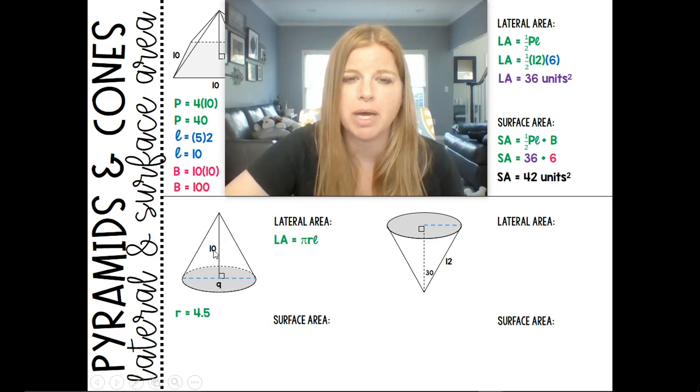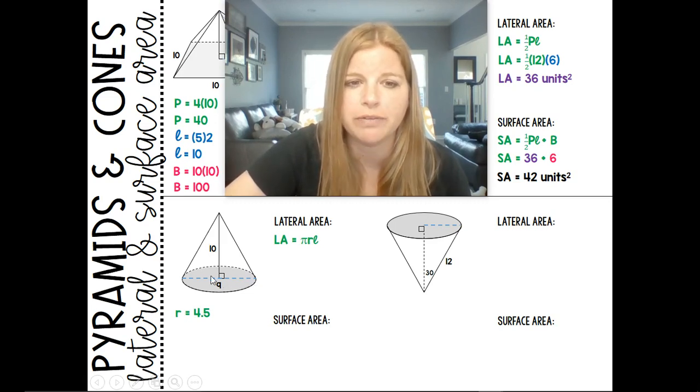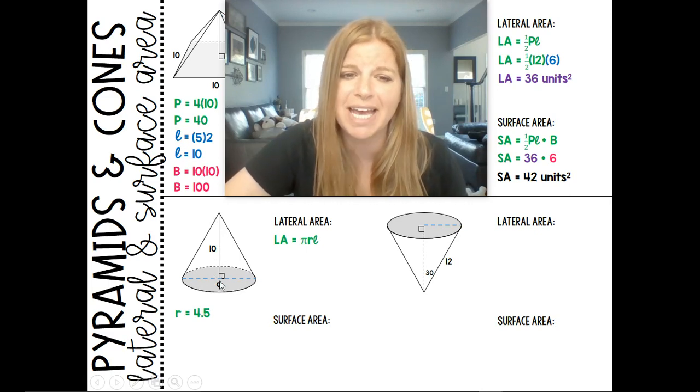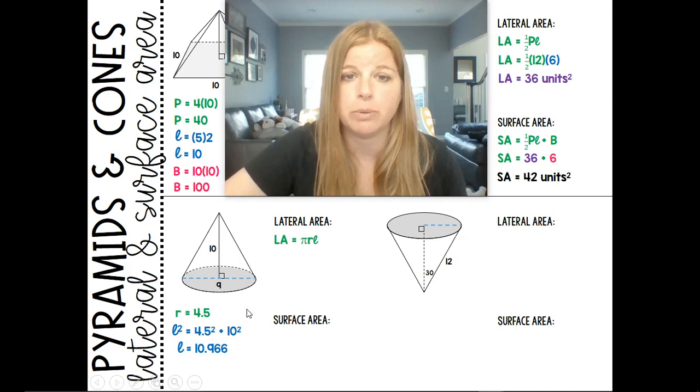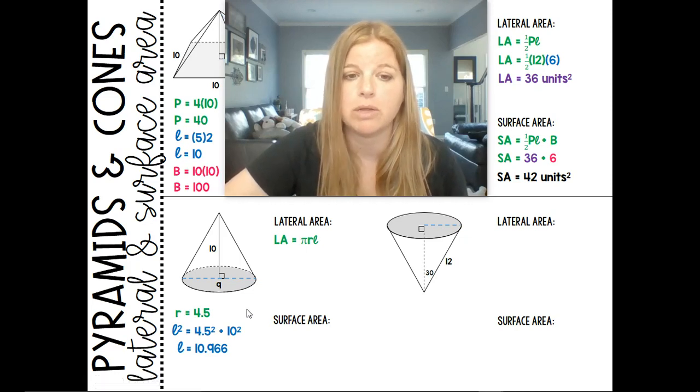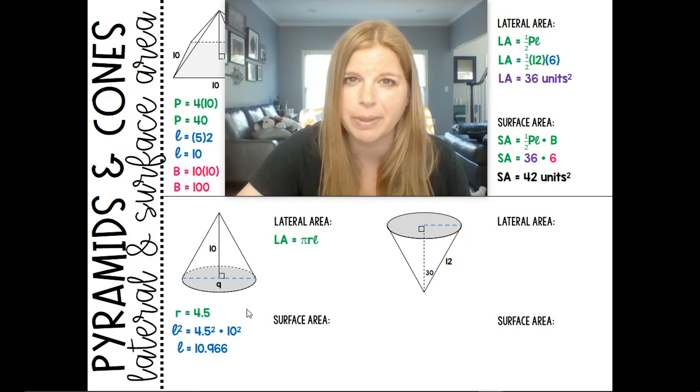I'm not given my slant height, but think about the fact that if this is 4.5 and the height of the cone is 10, I can use the Pythagorean theorem to solve for the hypotenuse C. So 4.5 squared plus 10 squared would equal that L squared. It ends up giving me approximately 10.966 after I do all of the work, which obviously I'm not showing you step by step.